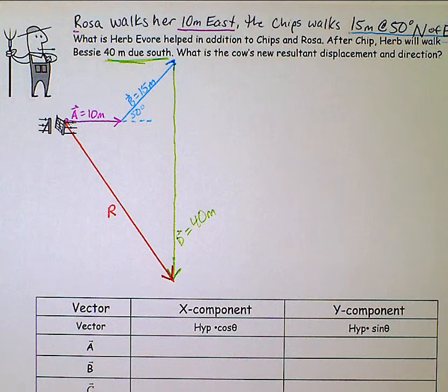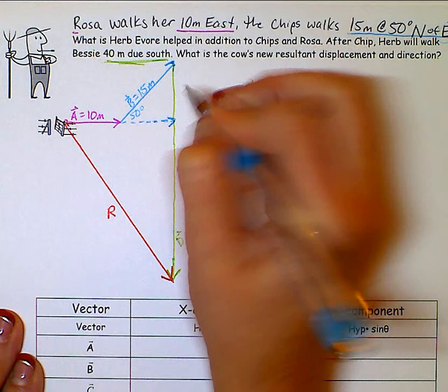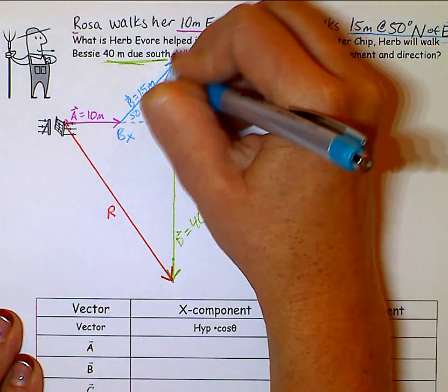Back to our steps. We've already drawn everything tip to tail and I've got my resultant from the very beginning to the very end. Now, anytime you have something that is a diagonal, whether it's velocity or displacement or forces or anything that's a diagonal, you need to stop and break it down into its two parts. So this has an x part that's horizontal and it also has a y part that's vertical.